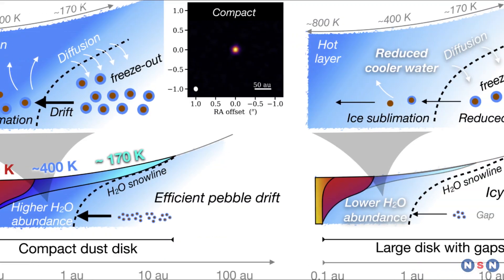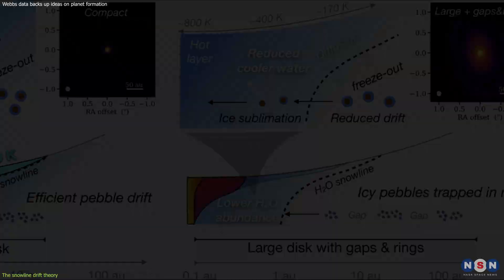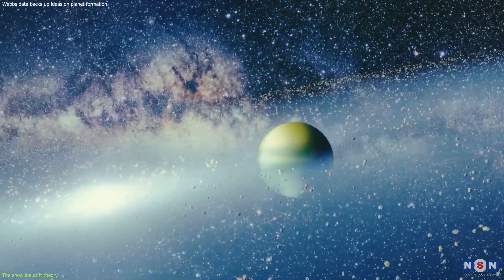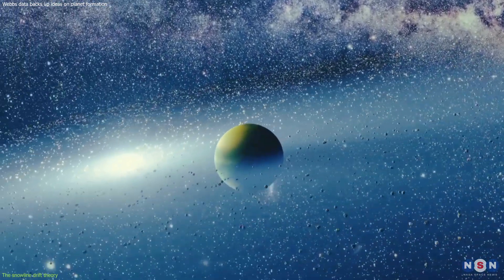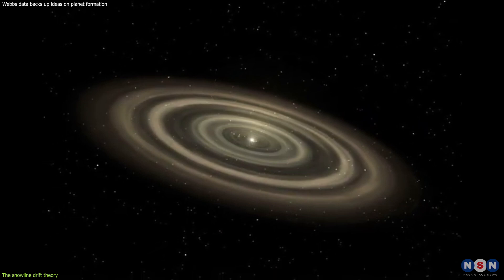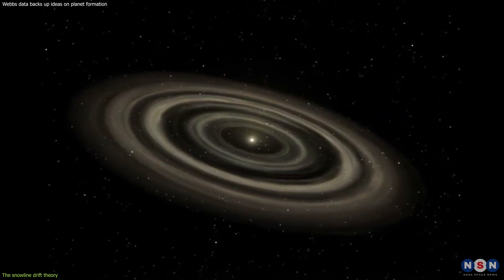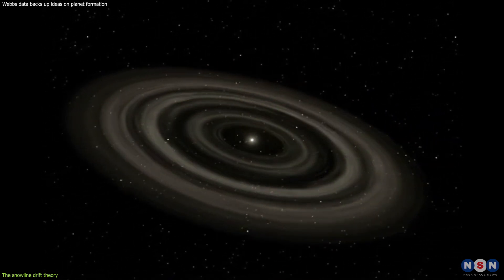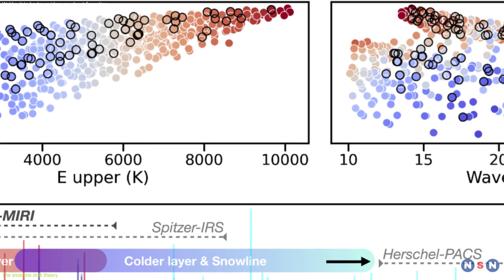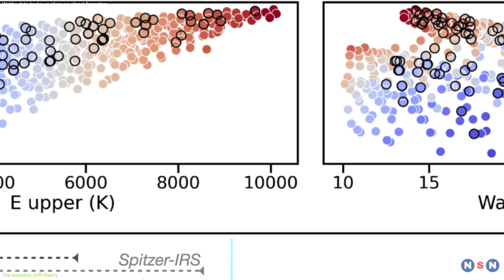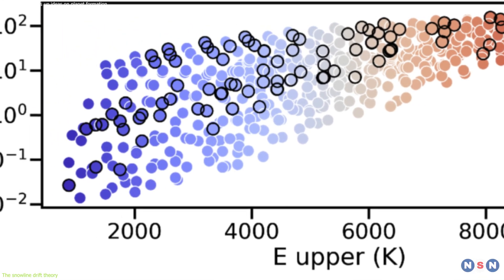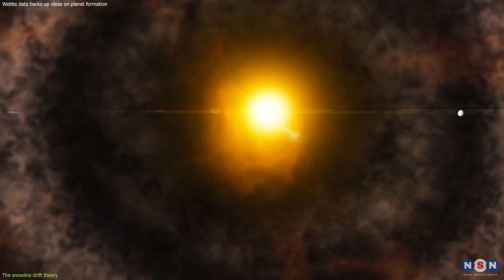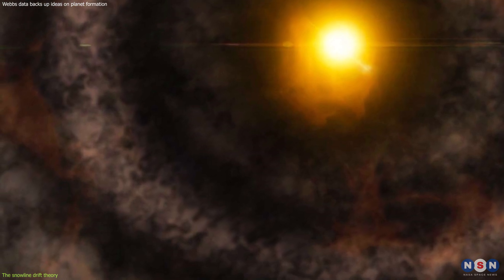The first topic we will talk about is the Snowline Drift Theory, which is the long-proposed theory of how planets are formed from icy pebbles that originate in the cold, outer regions of protoplanetary disks. The Snowline Drift Theory is based on the idea that the temperature and pressure in protoplanetary disks vary with distance from the star. The closer you are to the star, the hotter and denser the disk is, and the farther you are, the colder and thinner the disk is. This means that different types of materials can exist in different regions of the disk, depending on their melting or sublimation points.